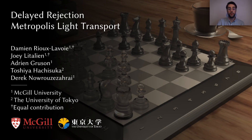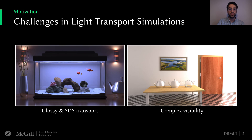Today we will be presenting a new technique to automatically balance local exploration and computational efficiency in primary sample space. We are interested in rendering scenes with challenging radiometric properties such as this aquarium with glossy and specular transport, as well as a classic Veach scene with complex visibility. The sparsity of contributive light paths makes this problem especially difficult, as only a tiny fraction of these paths actually contribute to the final image.